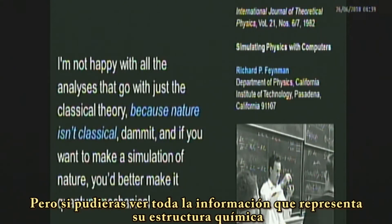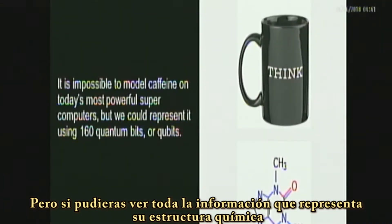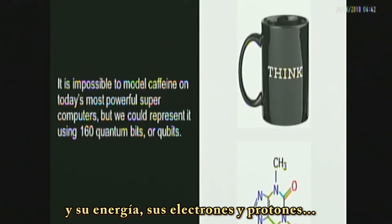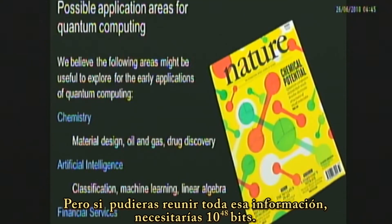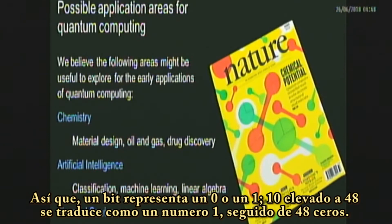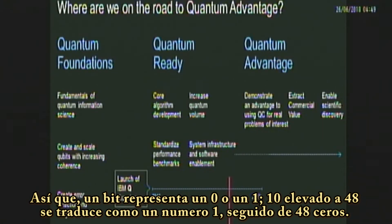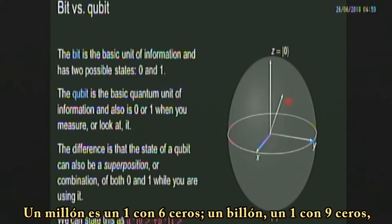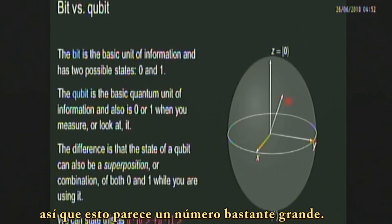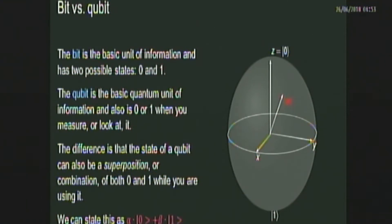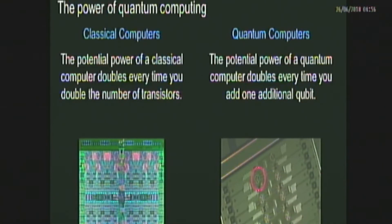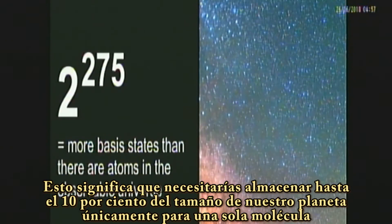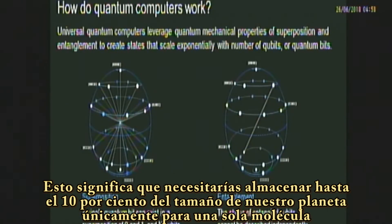But if you were to look at all the information that represented the chemical structure of that — the energy, the electrons and the protons — if you were to get all that information together, you would need 10 to the 48th bits. A bit is zero or one. 10 to the 48th is one with 48 zeros. A million is one with six zeros, a billion is one with nine zeros. This number is so big that it could be comparable to 10% of all the atoms in the Earth — you would need storage as much as 10% of the size of our planet just for one molecule at one moment. A classical computer is never going to do that.